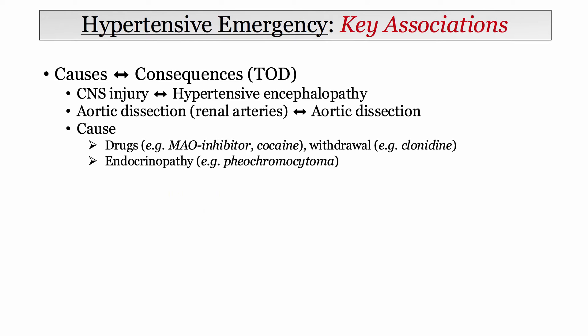Likewise with aortic dissection — a dissection into the renal arteries can cause a hypertensive emergency, but hypertensive emergencies can also cause aortic dissection. Causes and consequences. Other noteworthy causes of severe blood pressure elevation include certain drugs such as MAO inhibitors or drug withdrawal as seen with clonidine. The endocrinopathies can also cause hypertensive emergencies and will be reviewed in a separate presentation.